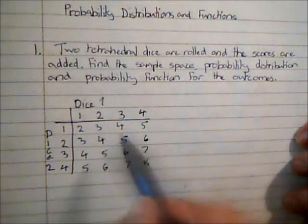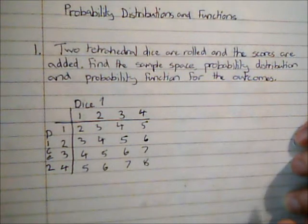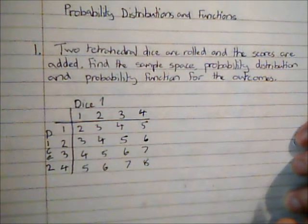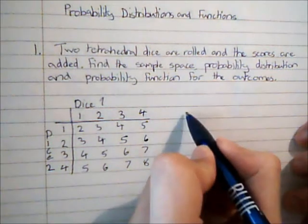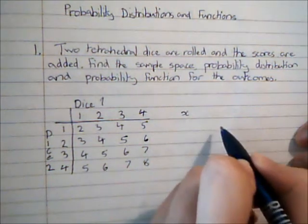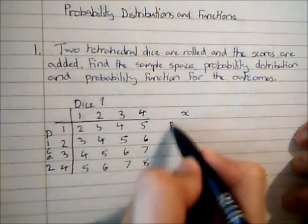Find the sample space which we've done. The probability distribution—so I'm going to say we'll let one of the outcomes be x, and then we're going to look at the probability that x is equal to x.